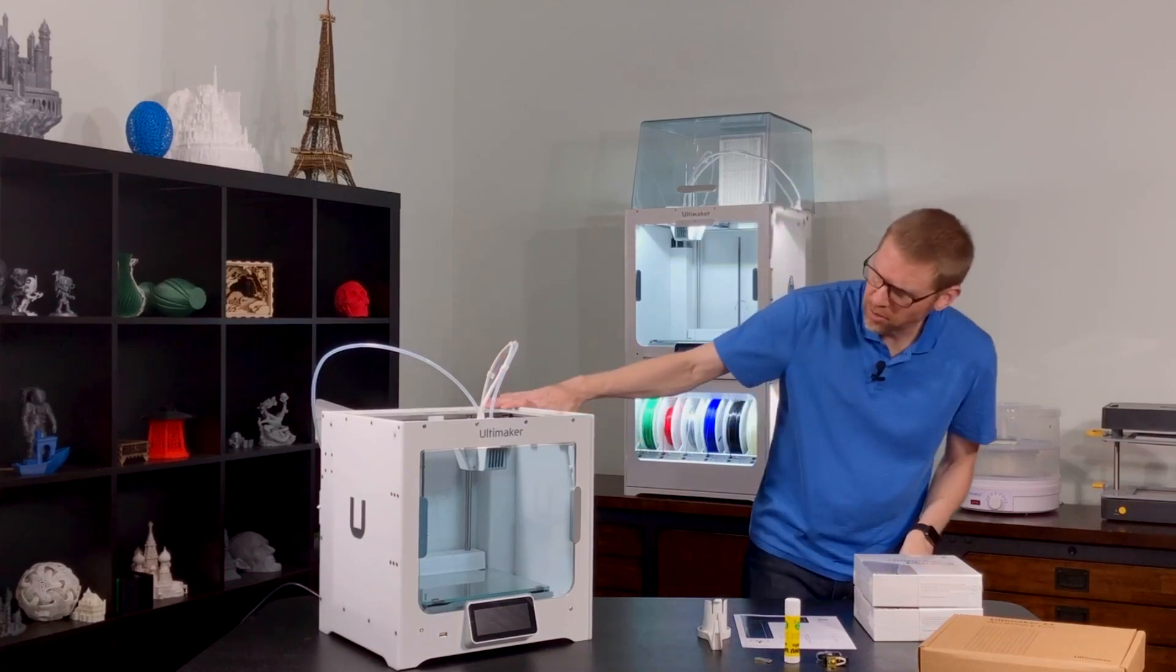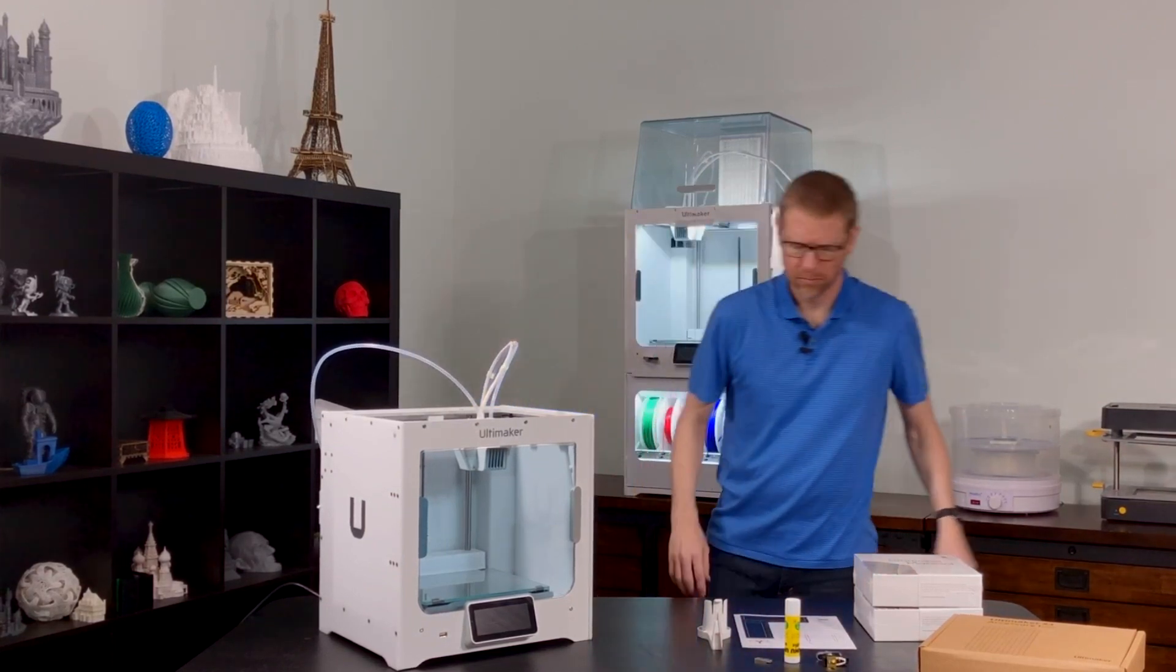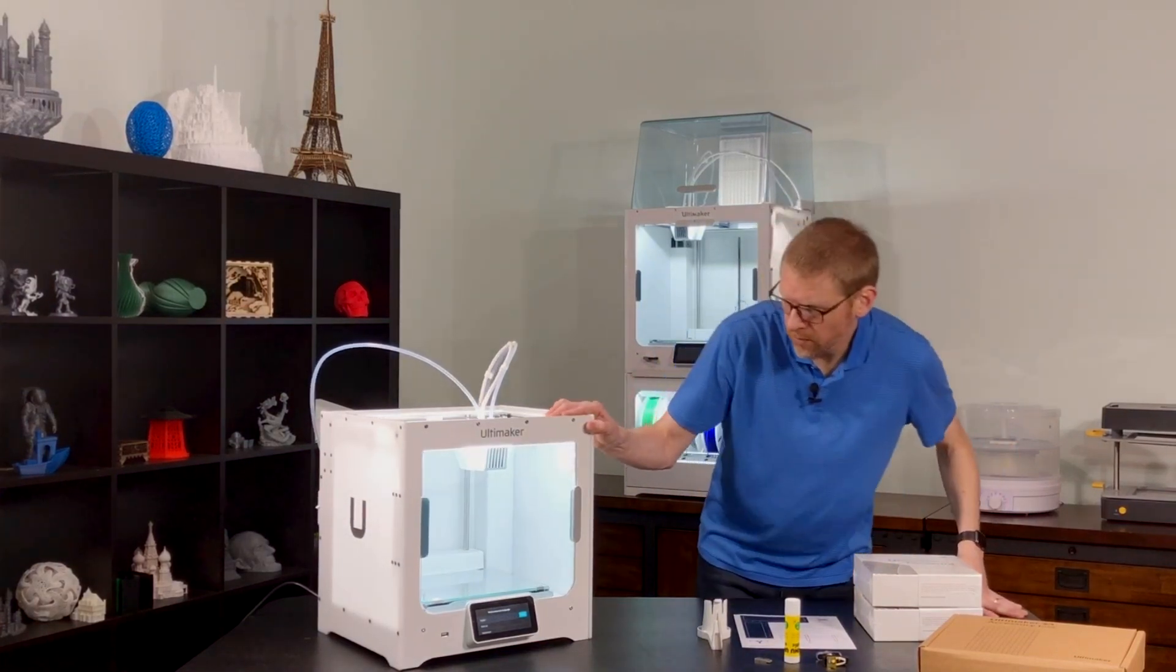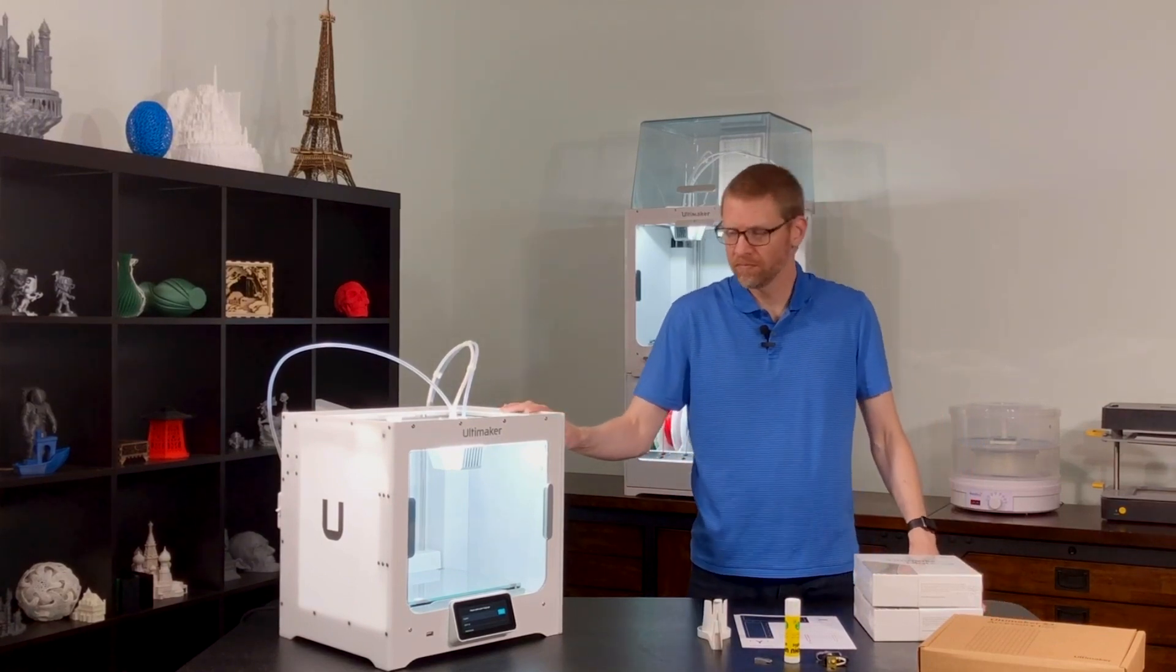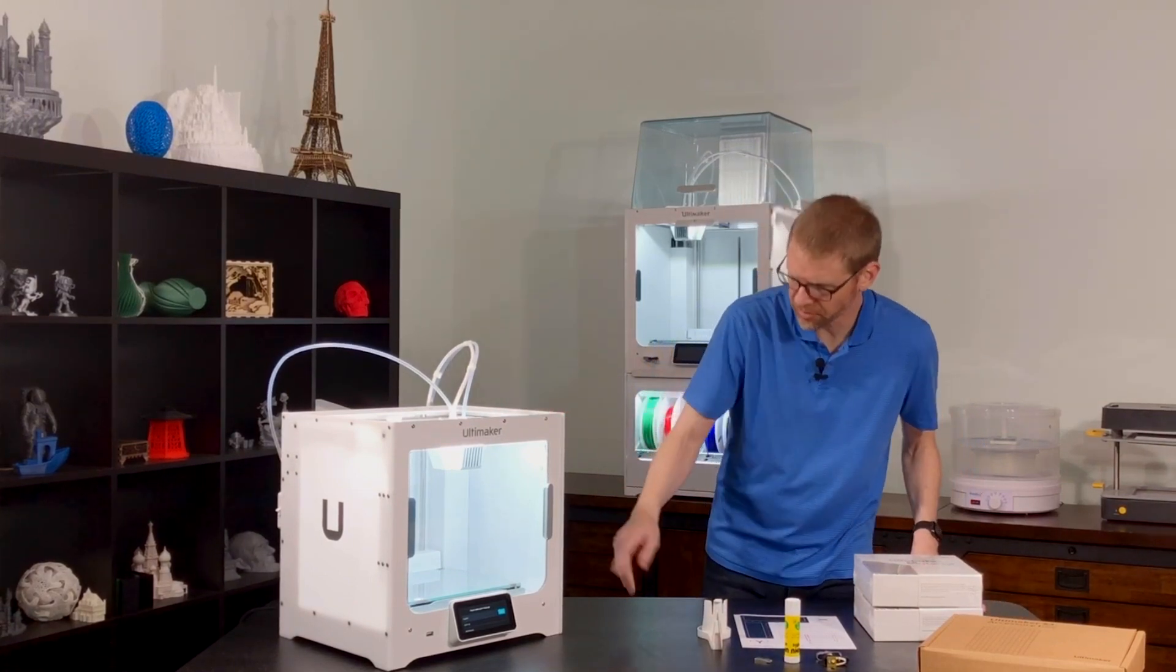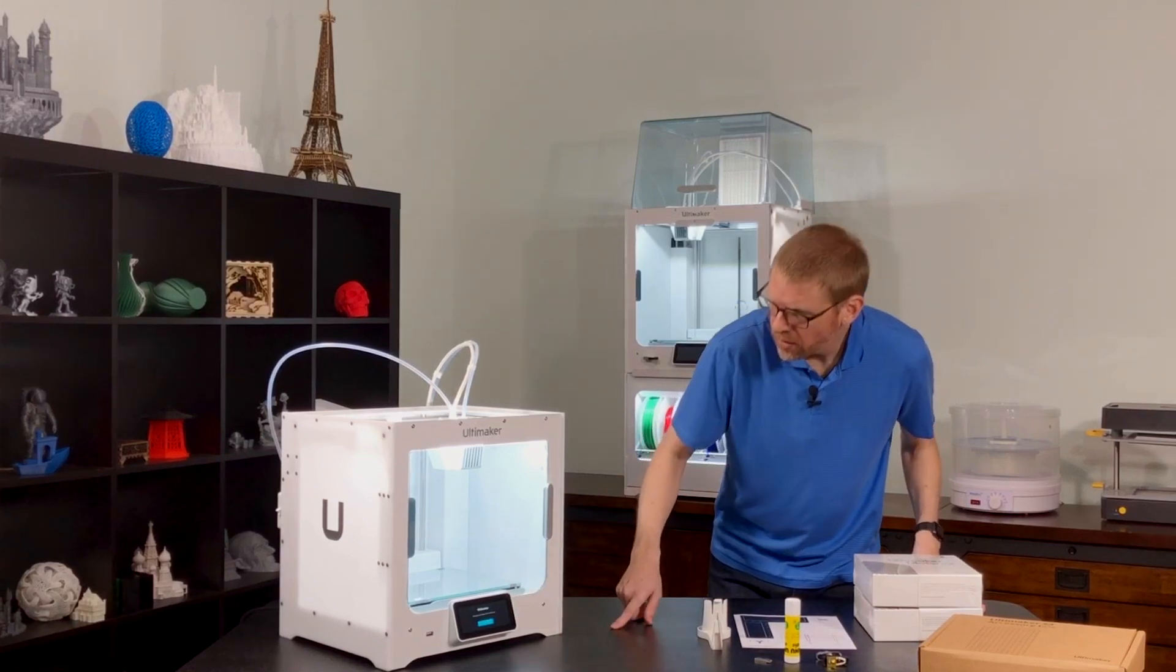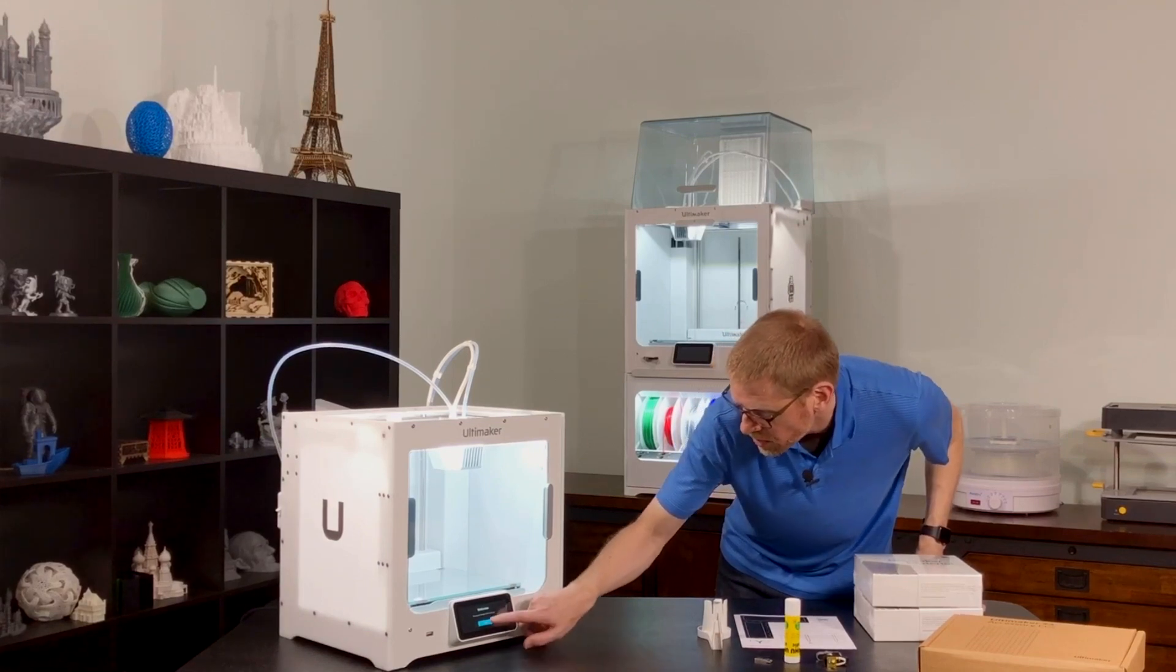All right, so we've got it plugged in now. I'll go ahead and turn it on. Now it's taking us through the initial setup wizard. And it's very easy. We'll just go through that. The first thing it asks is our language. I'm going to select English. Welcome. Set up your Ultimaker S3 for first use. Start.